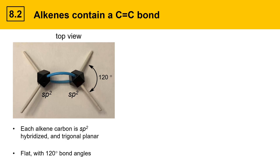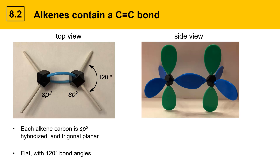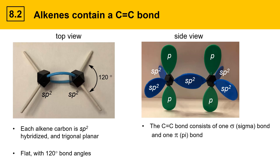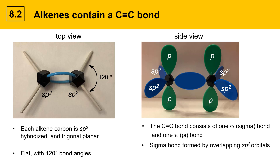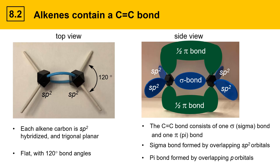This leads to a flat geometry with 120-degree bond angles. From this perspective the alkene lies in the plane of the screen, with a top face above and a lower face below. This picture shows a side perspective of the alkene with orbitals to indicate the geometry and bonding. The sp2 hybridized lobes of each carbon are shown in blue, while the unhybridized p orbitals are shown in green. The C=C bond consists of one sigma bond and one pi bond — the sigma bond is formed by overlapping sp2 orbitals, while the pi bond is formed by overlapping p orbitals.